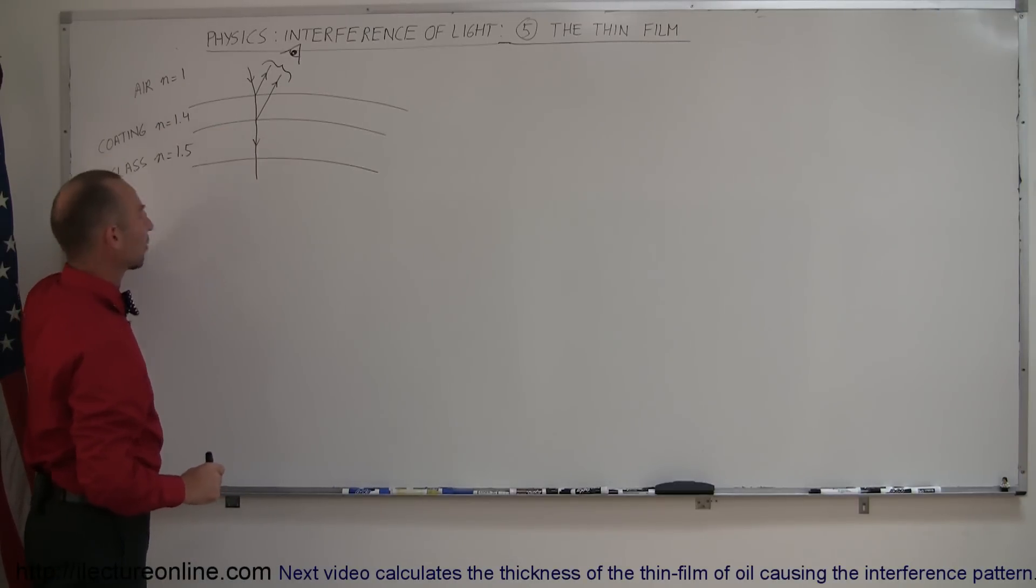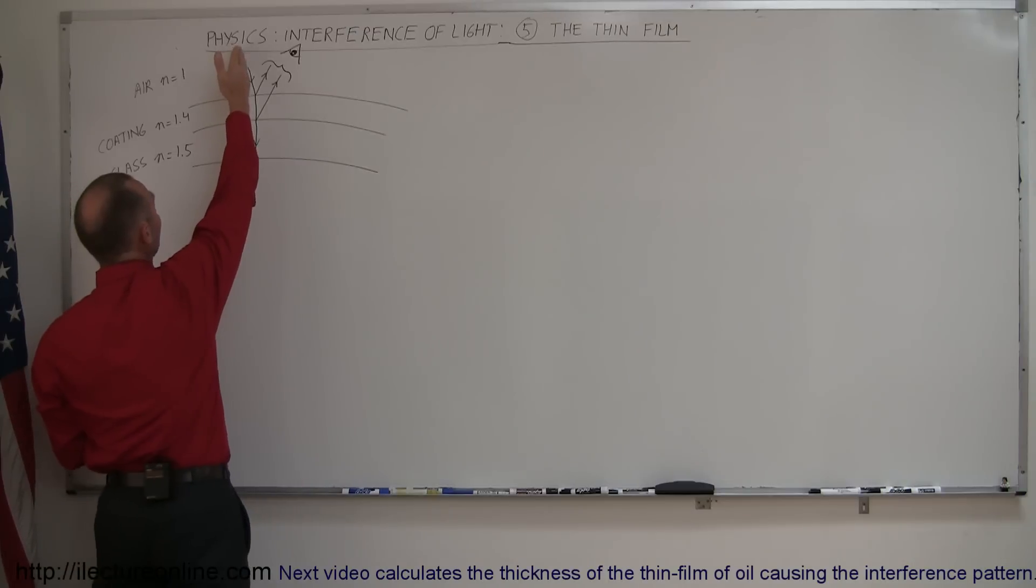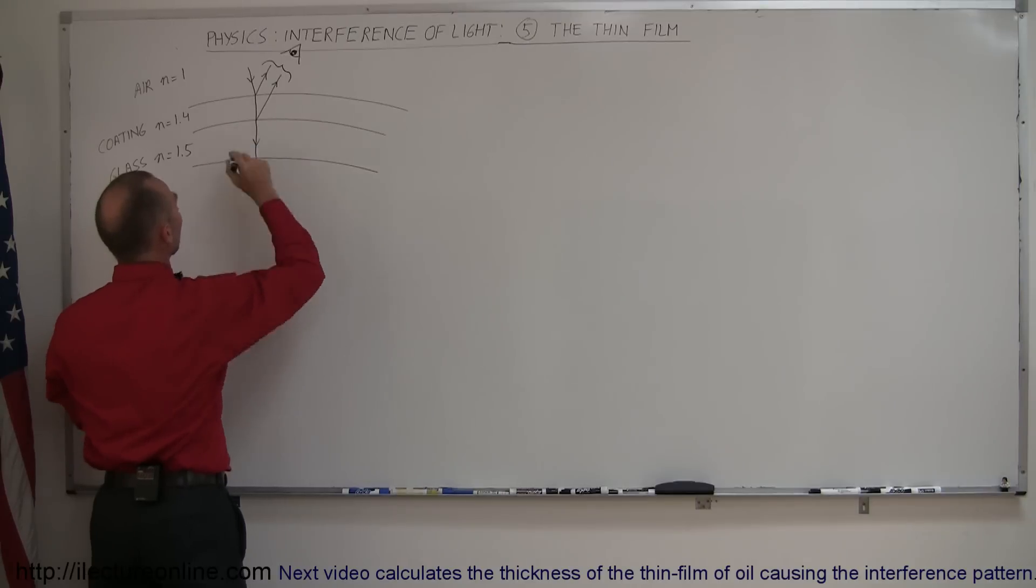And let's say in our example here, the index of refraction is 1.4. What that means is that when a beam of light comes to the boundary between the air and the film, part of it will be refracted and goes into the film, part of it will be reflected.